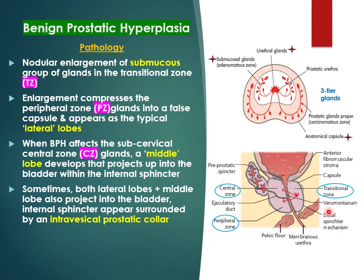Now let's look at the pathology of benign prostatic hyperplasia. The prostatic glands are arranged in three tiers. The innermost, around the urethra, are known as the urethral glands. The middle group are the submucous glands, which are the site for the origin of BPH. The outermost are the peripheral glands, the site where cancer of the prostate originates.